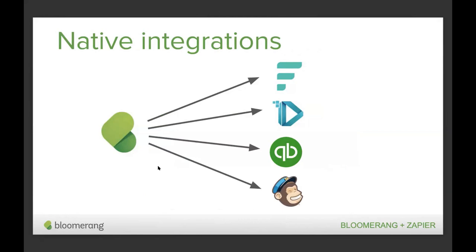It is easy to say that Bloomerang has really positioned itself as the most integration-friendly donor database in the marketplace. When we talk about Bloomerang integrations there are two types to differentiate between: native and custom. Native integrations — also called direct integrations — are built within the Bloomerang database. They are often the most user-friendly form of integration, offer a standardized sync of data between two systems, and are included in your Bloomerang subscription. We consider these templated integrations: there is a set structure that allows for some customization but not full customization. Native integrations available in Bloomerang include Fundraise Up, Donor Search, Give Butter, Mailchimp, QuickBooks Online, and more.